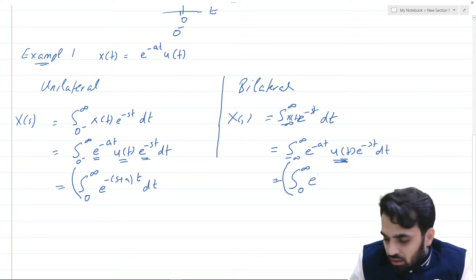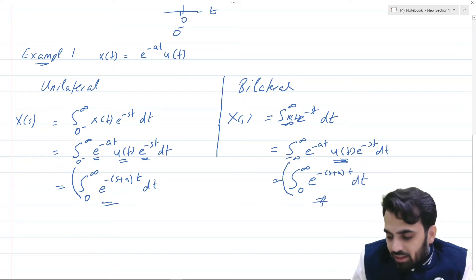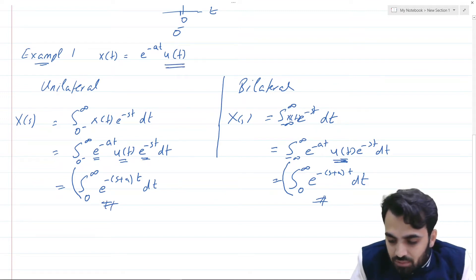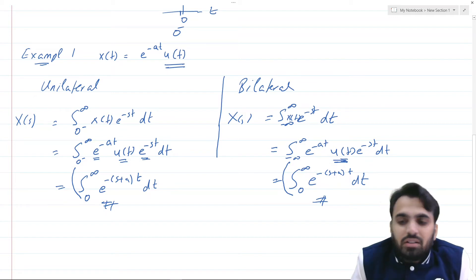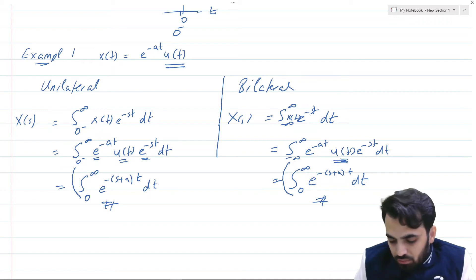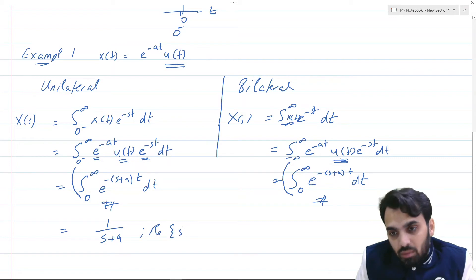The two integrals are exactly the same. Whenever we have a unit step function, the bilateral and unilateral transforms are equal because u(t) forces integration to start from 0 onward. So the solution for both transforms is simply 1/(s+a) with the real part of s greater than minus a.